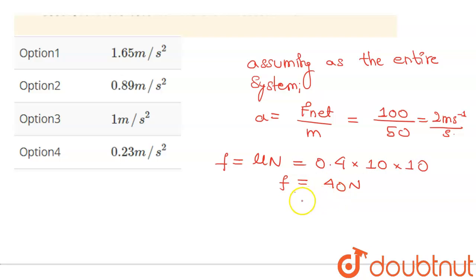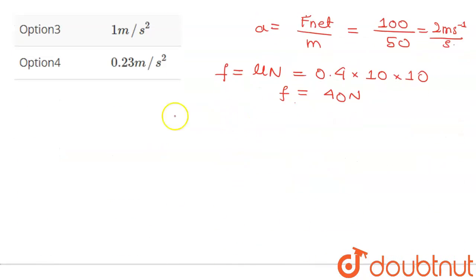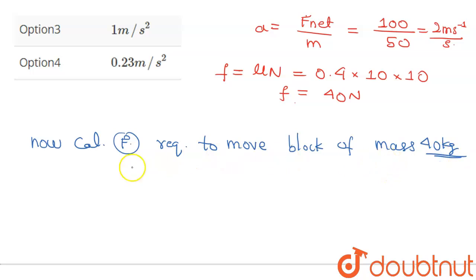Now calculating the force required to move the block of mass 40 kg. Force will be m into a, that is 40 into a. We know acceleration, that is 40 into 2. This is 80 Newton.